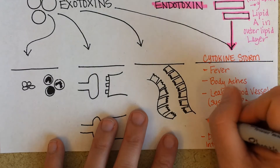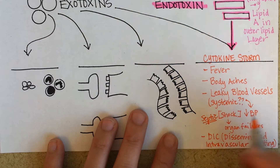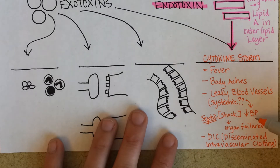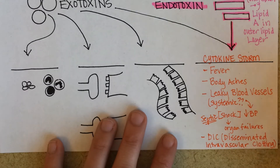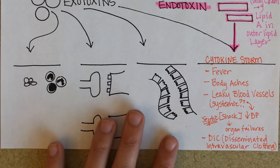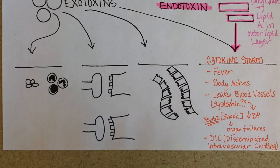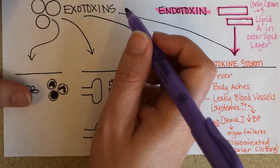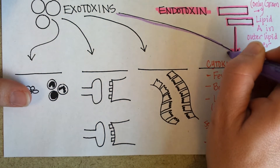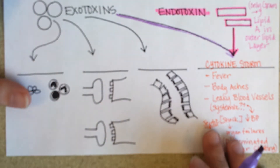This is an example of septic shock. Septic shock is when blood pressure drops precipitously due to a bacterial or pathogenic infection that is in the bloodstream, and this can be caused by gram-negative bacteria. Now they're not the only ones that can cause a cytokine storm — it is possible for gram-positive bacteria to do this too, with the production of some exotoxins.